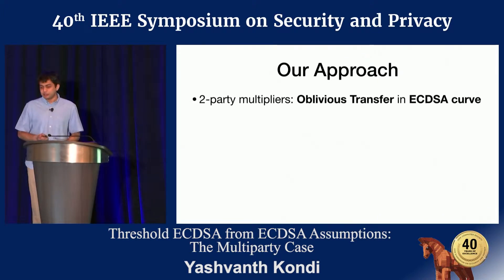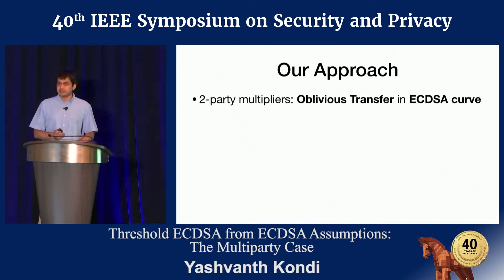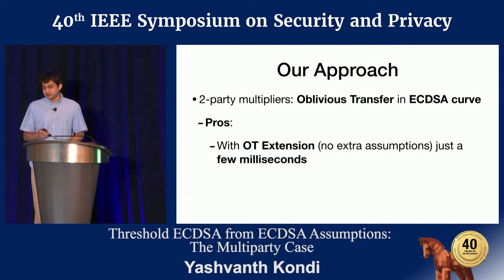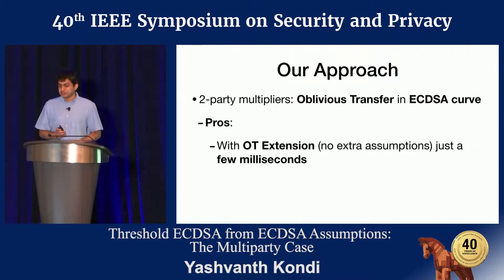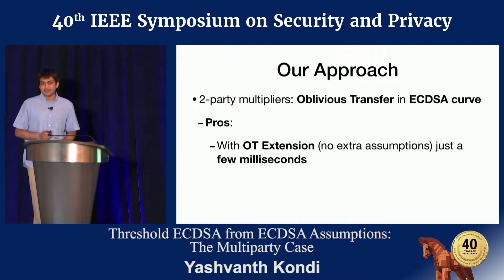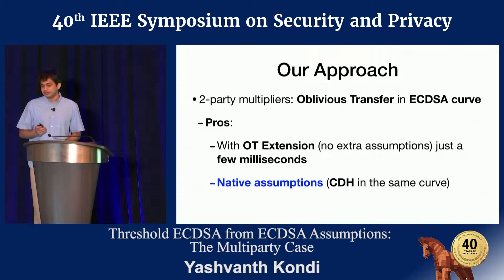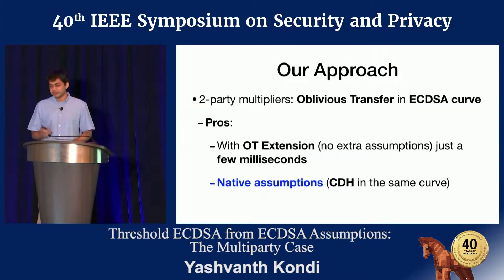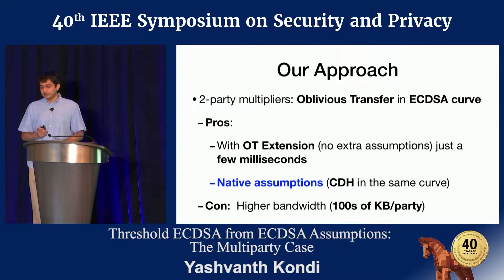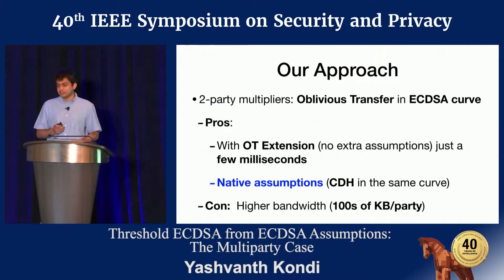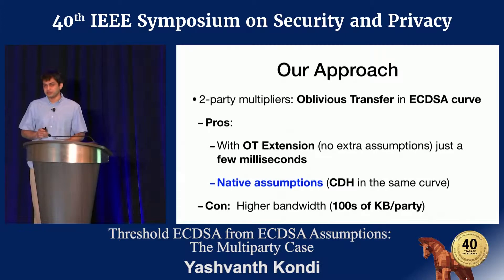At a high level, our approach is built on top of two-party multipliers — that's oblivious transfer — instantiated in the same curve as the signature. The advantage is that with OT extension, which requires no extra assumptions, a multiplication costs just a few milliseconds to execute. The cryptographic assumptions we need are native to the same curve — specifically, that the computational Diffie-Hellman problem is hard in that curve. On the other hand, we incur a penalty in terms of bandwidth — a few hundred kilobytes per party.